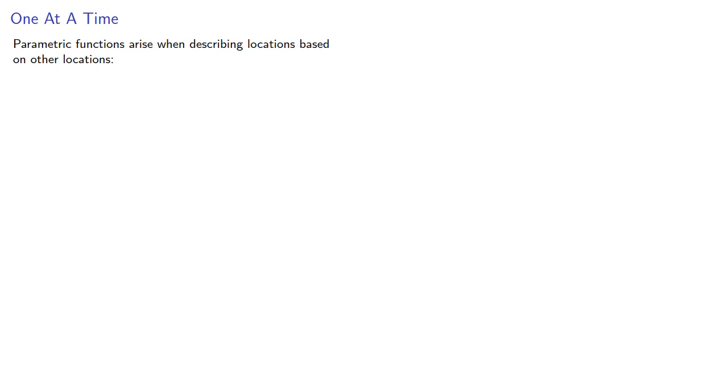Parametric functions arise when describing locations based on other locations. For example, we might have a point on a rotating disk that's moving.